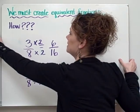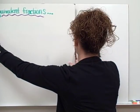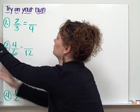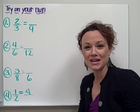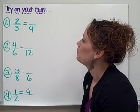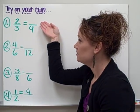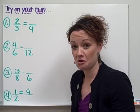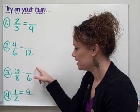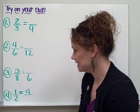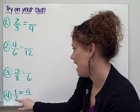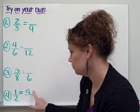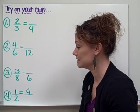All right, it's time for you to try some examples on your own. And you may do this in box 3 of your homework sheet. We have 2 thirds being equivalent to something over 9. 4 sixths being equivalent to something over 12. 3 eighths being equivalent to something over 6. And 1 half being equivalent to 4 over something.